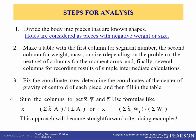The steps for analysis: divide the body into pieces that are known shapes — simple shapes like squares, triangles, rectangles, circles, half circles — whose centroids you can find on the inside back cover of the book. Remember, holes are considered as pieces with negative weight or size.